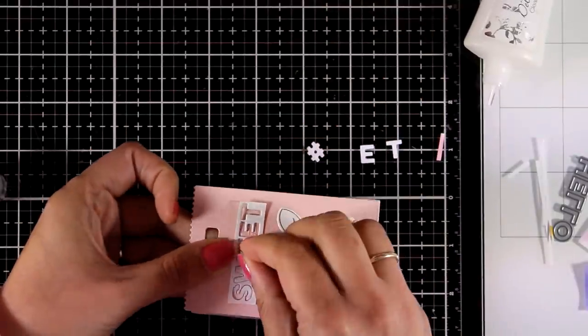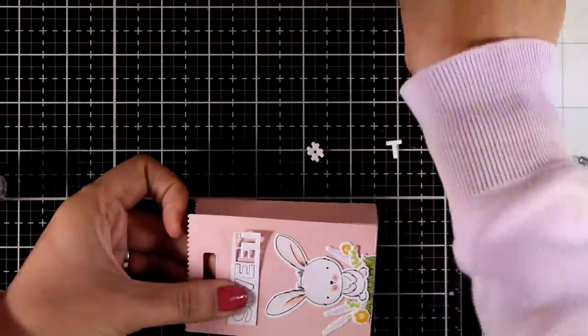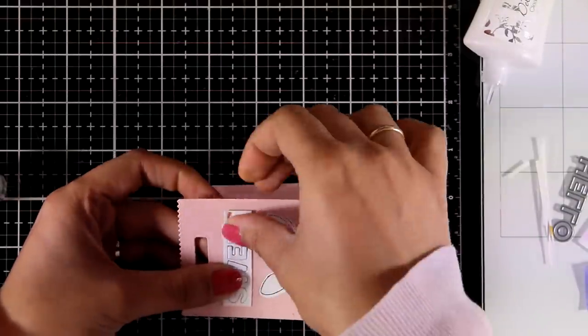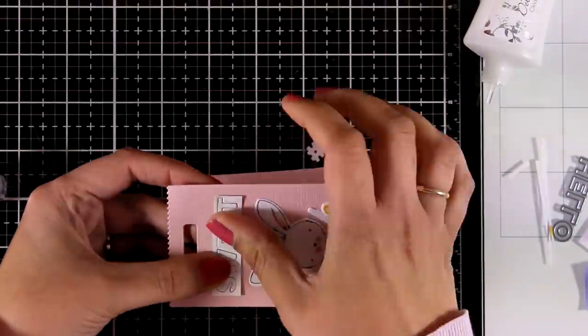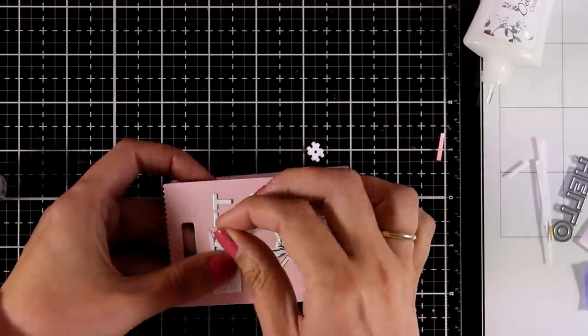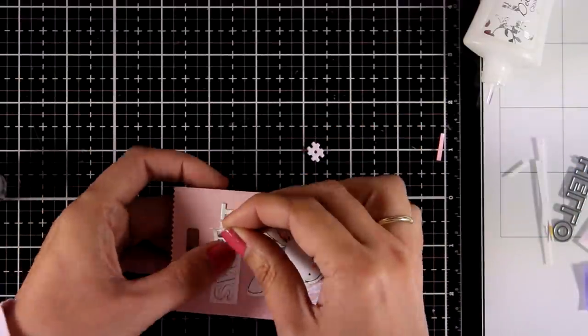I'm using the negative space here to make sure that my letters are nicely aligned. So this completes my little treat bag. I am going to tie a little bow at the top to keep it closed.